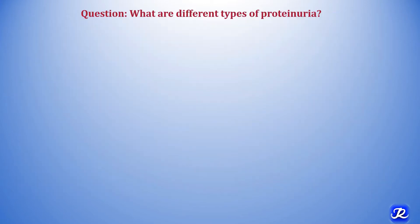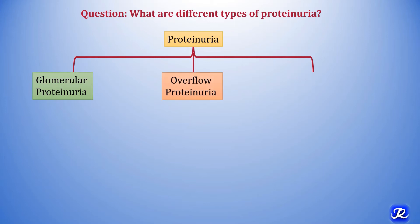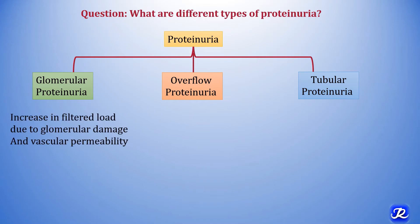What are the different types of proteinuria? There are three important types: the first is glomerular proteinuria, the second is overflow proteinuria, and the third is tubular proteinuria. Glomerular proteinuria is due to glomerular damage — increased filter load due to glomerular damage and vascular permeability.